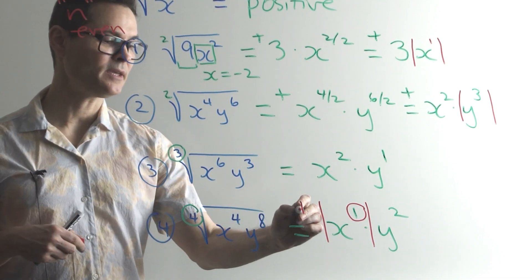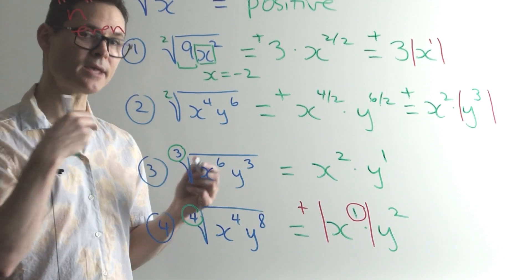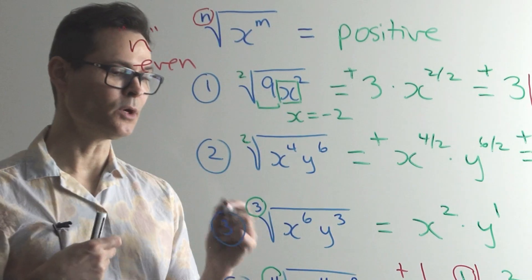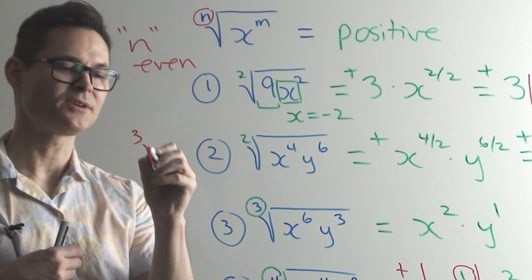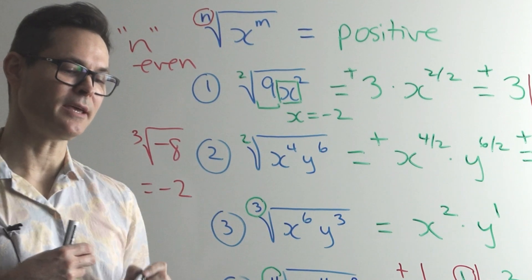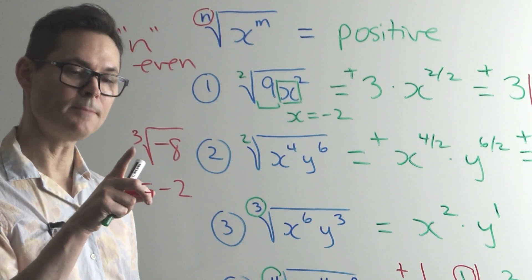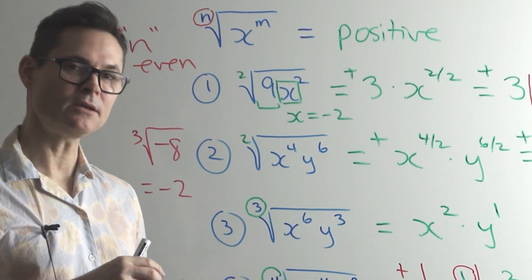Remember, when the index is even, you want a positive answer. When the index is odd, the answer can be negative. Don't forget, the cube root of negative 8 is equal to negative 2. So with indices that are not even, you can get a negative answer.